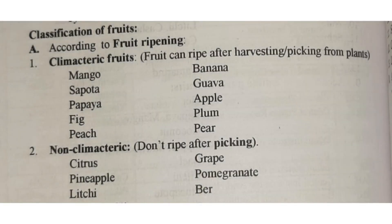Going with the first one: fruit ripening. There are two types — climacteric and non-climacteric. Climacteric fruits are those that can ripen after harvesting or picking from plants. Means we can keep it in the basket or keep it in the house, and it can ripen.